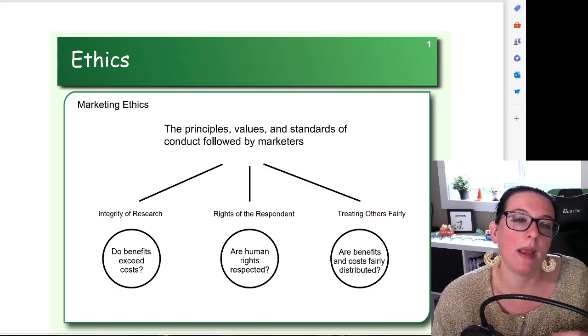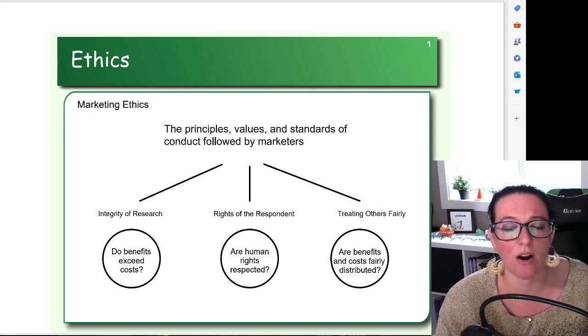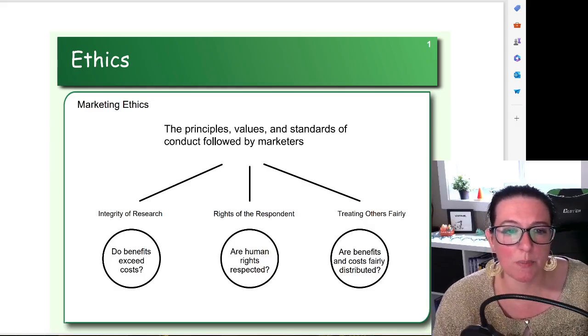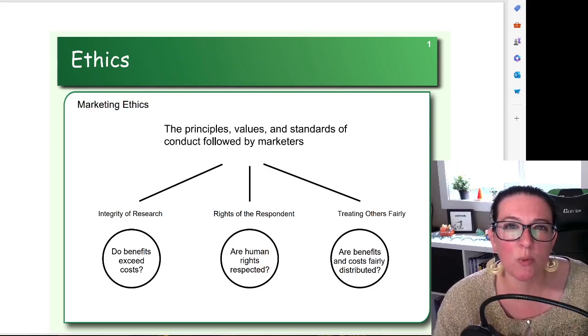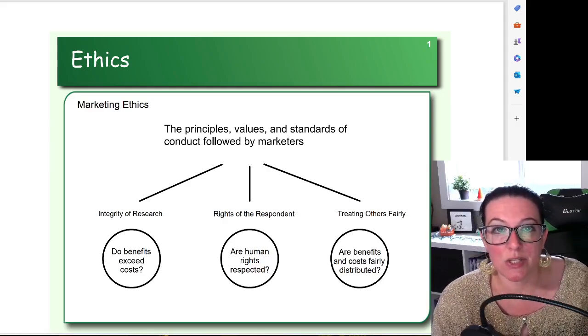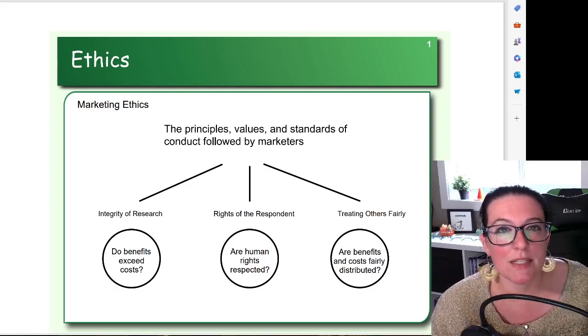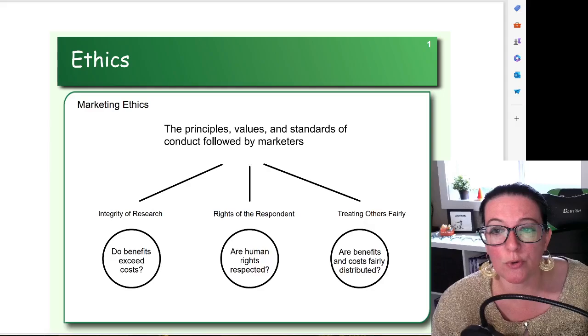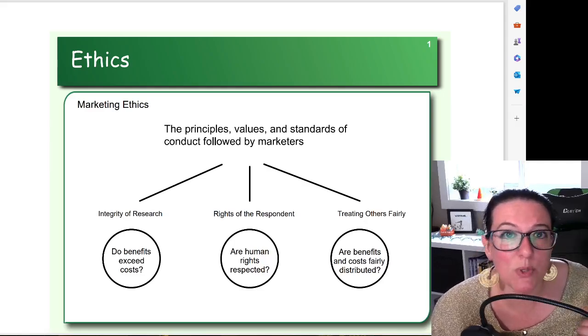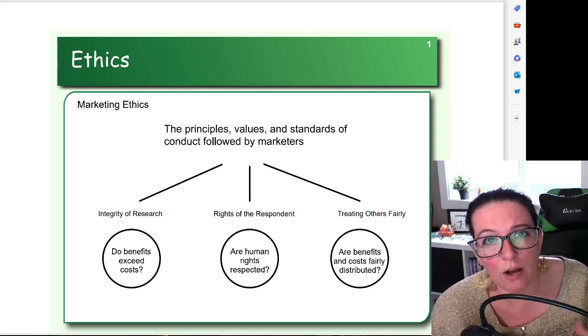We need to make sure that we are treating people fairly, that the benefits and costs are distributed fairly. You agree to participate and provide information - well I can't sell that information to a third party without your permission. I can't disclose the fact that you participated in the research without your permission. We have to consider, for example, what if we are doing interviews with inmates and they are telling us about how they came to be in prison?